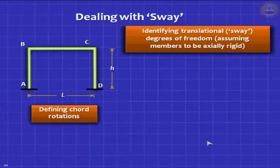That's what we will do now. So let's begin with the simplest case of a portal frame. In this portal frame, we want to identify the translation degree of freedom. We have already said that you have two rotation unknowns and one translation unknown. We are assuming all the members should be axially rigid.